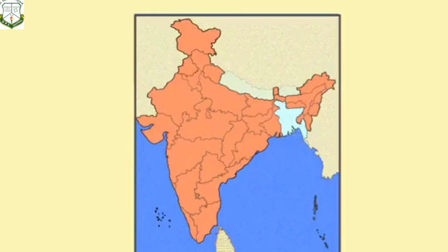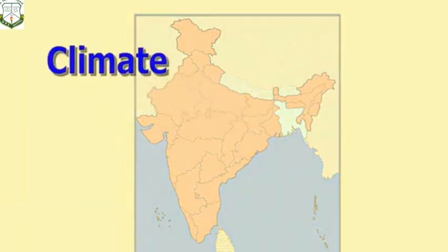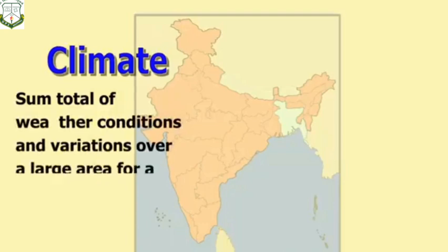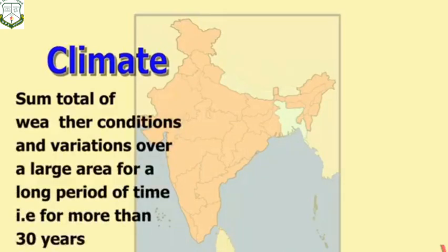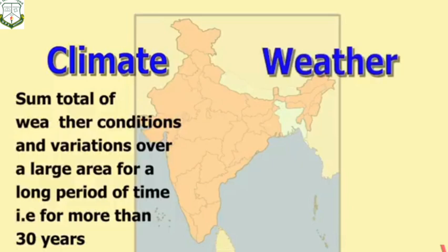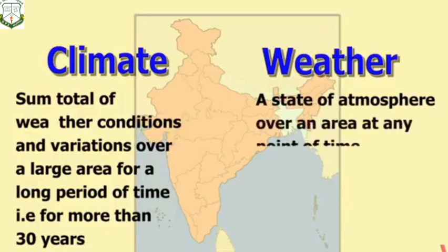In this video we shall study about the climate of India. Climate refers to the sum total of weather conditions and variations over a large area for a long period of time — that is, for more than 30 years. When we study the weather conditions of India for more than 30 years, we conclude that the climate of India is monsoon type. Weather refers to the state of the atmosphere over an area at any point of time — if it is raining, we say the weather is rainy; if it is very cool, we say the weather is cool.